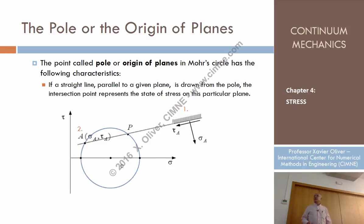And the property can also be reversed. So if I just join one point of the Mohr circle with the pole, the trace of the plane where these stresses act is this line.